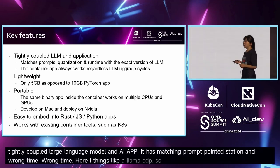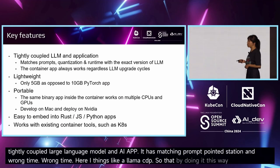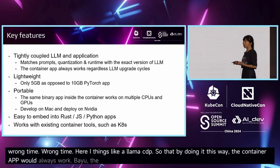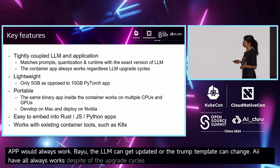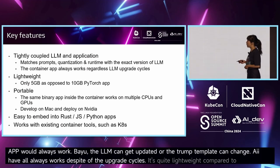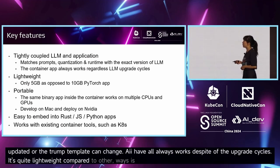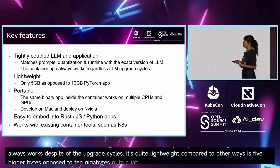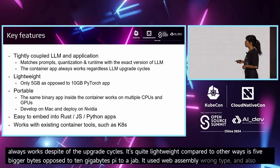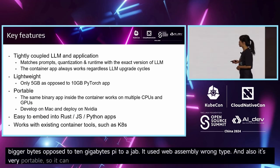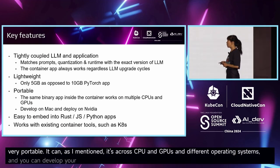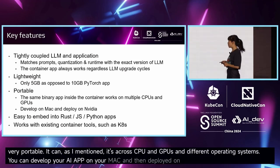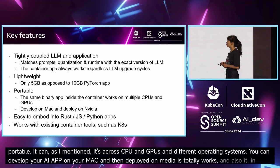By doing it this way, the container app would always work even though the runtime can get updated or the prompt template can change — your AI app always works despite upgrade cycles. It's quite lightweight compared to other approaches: five gigabytes opposed to a ten gigabyte PyTorch app, because it uses a WebAssembly runtime. It's also very portable — it works across CPUs, GPUs, and different operating systems. You can develop your AI app on your Mac and then deploy it on NVIDIA hardware.